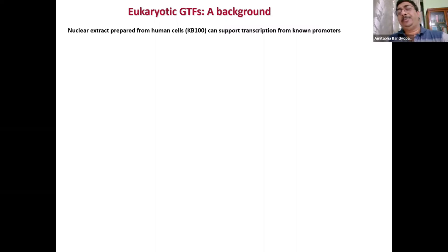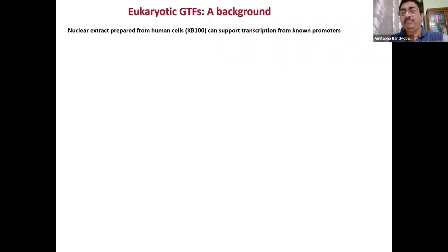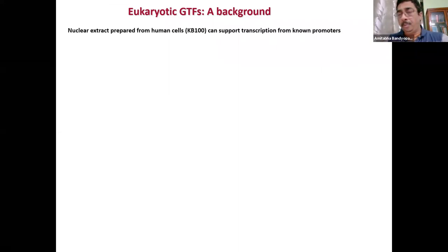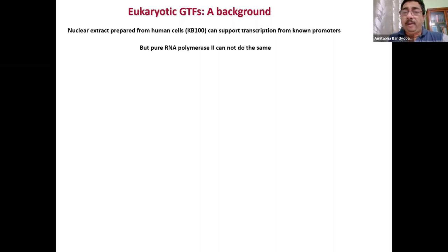Many groups before him showed that you can do transcription in vitro: you take a known piece of DNA with a promoter, add nuclear extract and radioactive RNTPs, and you get production of radioactive RNA. Because transcription is a nuclear event, if you take nuclear extract from human cells, it can support transcription from known promoters. However, if you purify the RNA polymerase alone, it cannot transcribe from the known promoters.